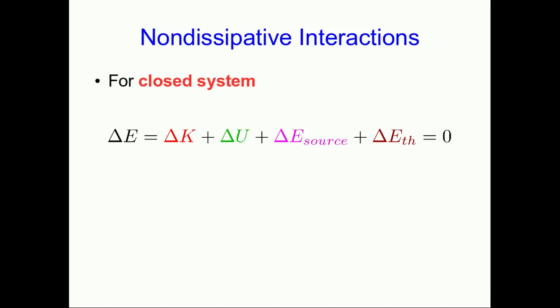For any closed system, by definition the total system energy is constant, or in other words the change in system energy is always zero. And we can express that as a sum of the change in kinetic, potential, source, and thermal energies.